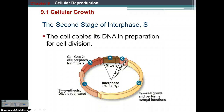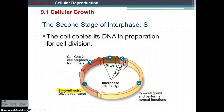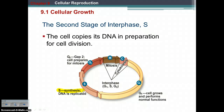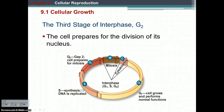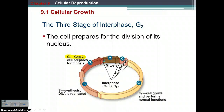The second stage of interphase is the S stage, where S stands for synthesis — meaning you're putting something together. In this case, that's the DNA. So the S stage is where the DNA is being synthesized or replicated. The last stage of interphase is G2, or Gap 2, which is a checkpoint. Right before you go through mitosis, you want to make sure you've done everything correctly — that you've duplicated your DNA correctly and are ready to divide.